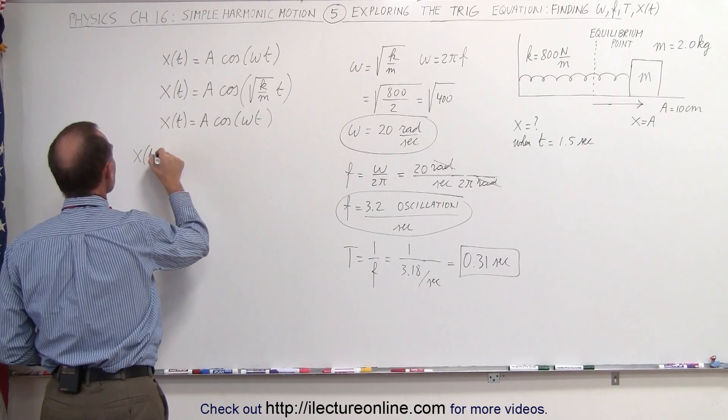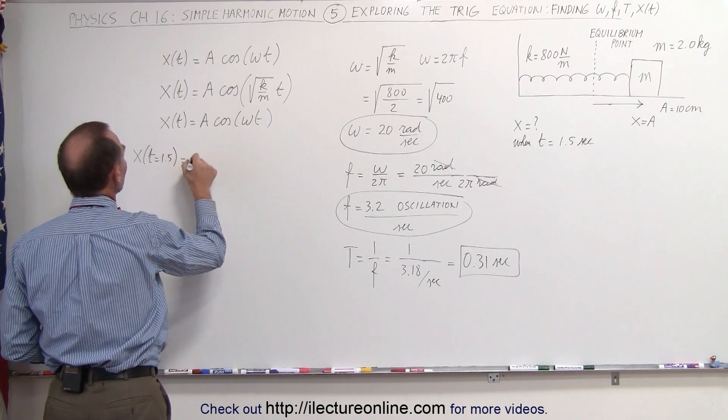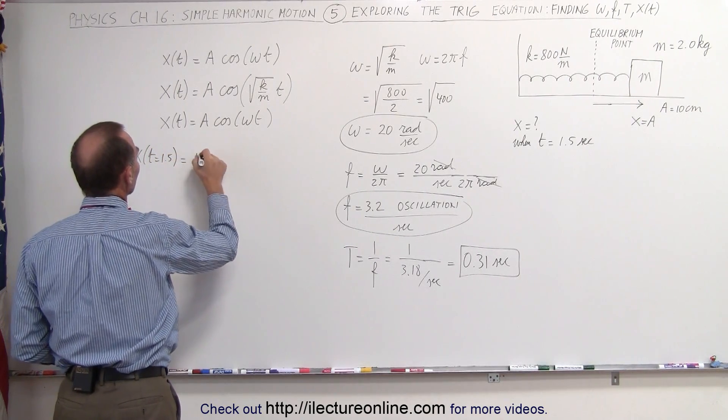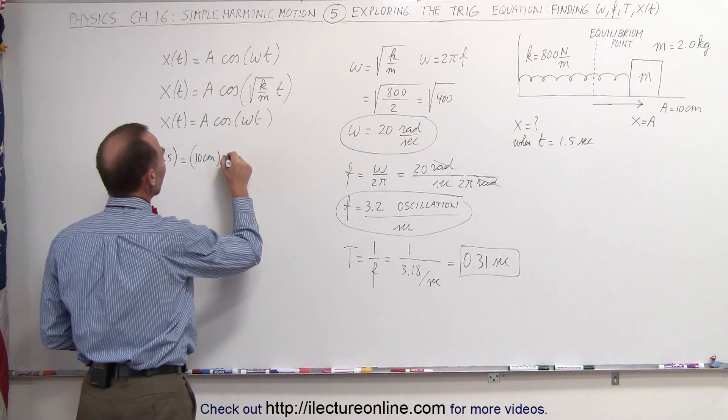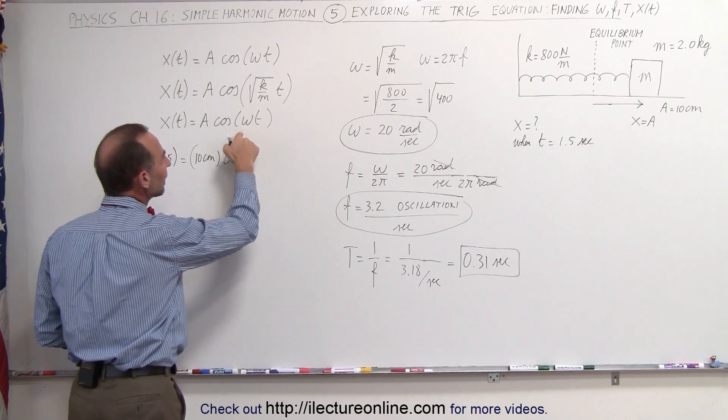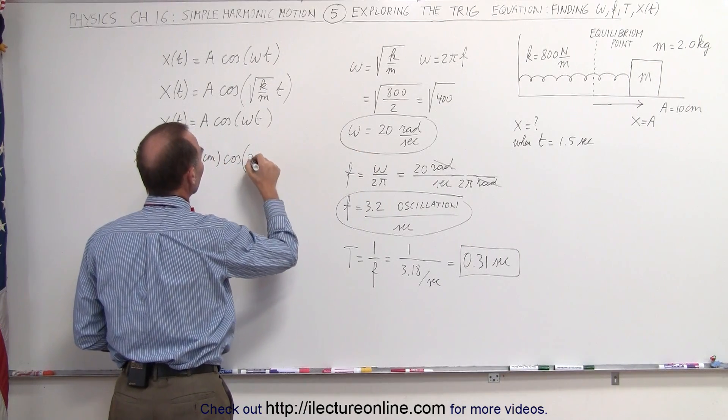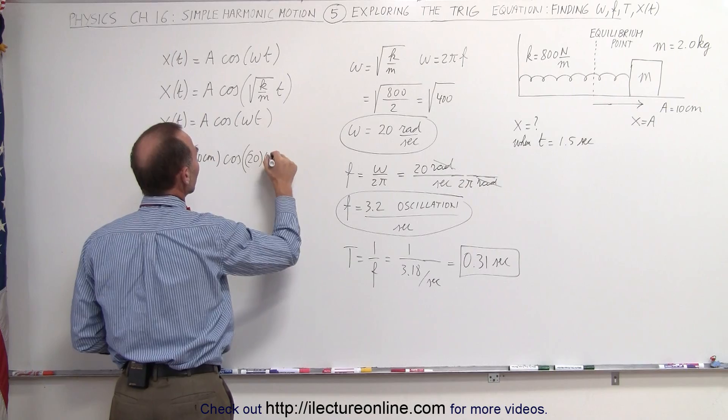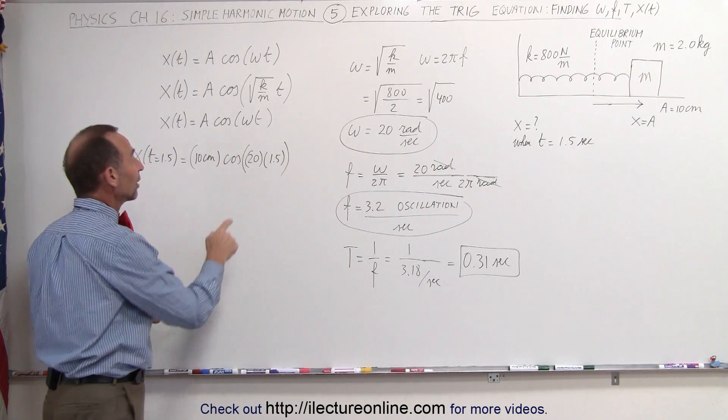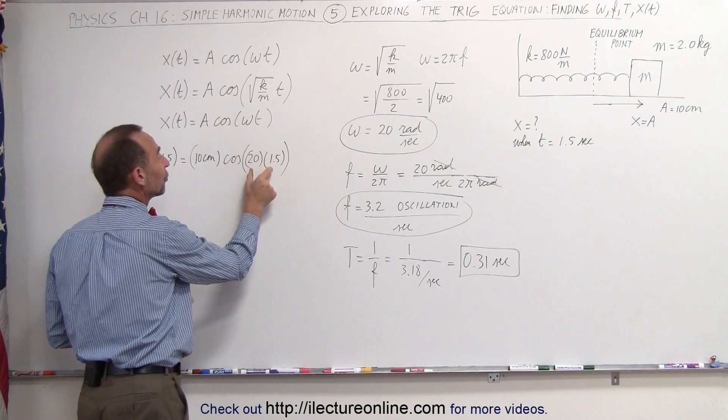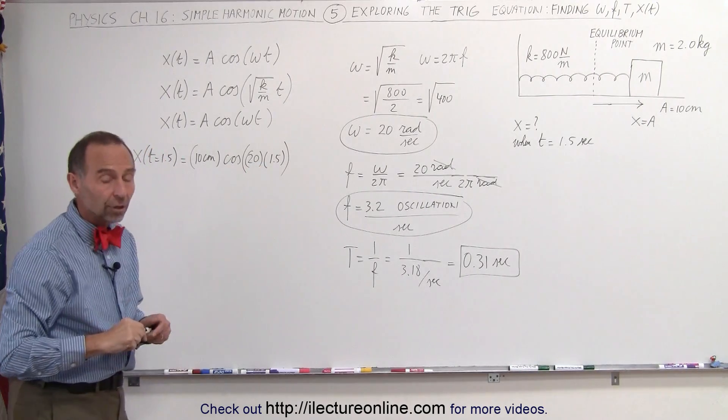x when t equals 1.5 is equal to the amplitude, which is 10 centimeters. You don't have to convert to meters, you can keep that in centimeters. Times the cosine of omega. Omega is 20 radians per second times the time, which is 1.5. That means we're trying to find the cosine of 30 radians, not 30 degrees.